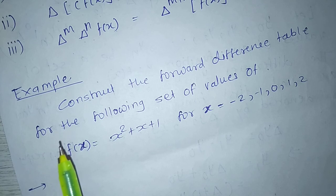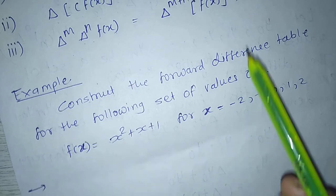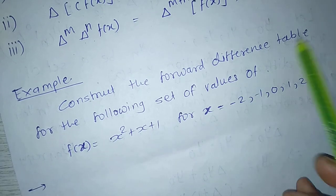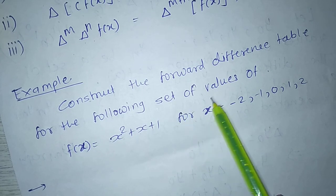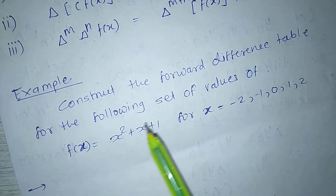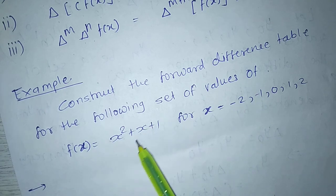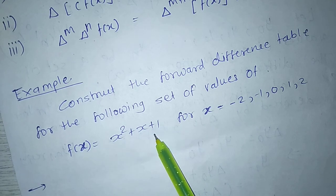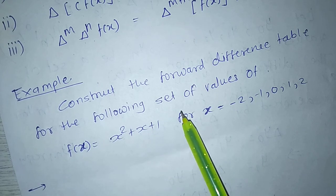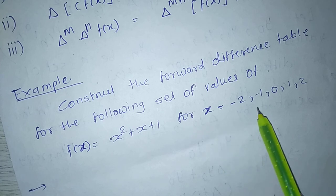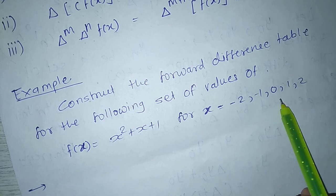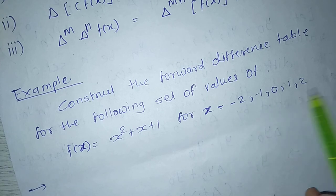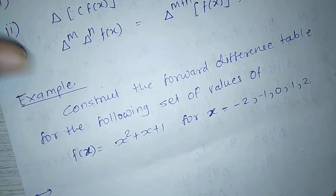Example: construct the forward difference table for the following set of values of f(x) = x² + x + 1 for x equal to minus 2, minus 1, 0, 1, 2.